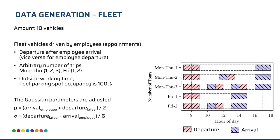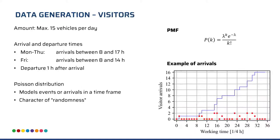The mean value and standard deviation of each arrival and departure for the fleet is calculated in the same fashion as for the employees. For visitors, we expect a maximum of 15 vehicles which arrive at arbitrary times throughout the working hours of employees, and we assume they depart after one hour of visit. In this case we use the Poisson distribution, as it is a good model for random events.